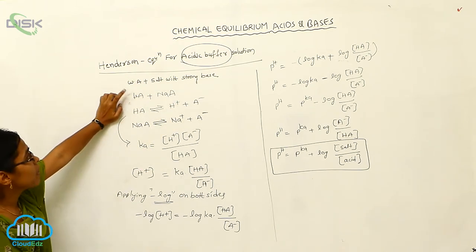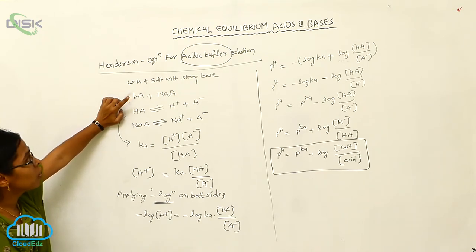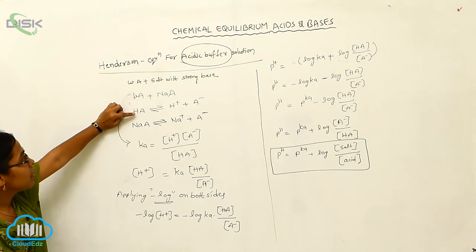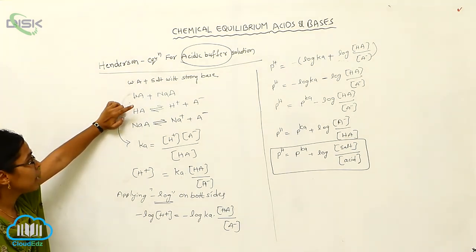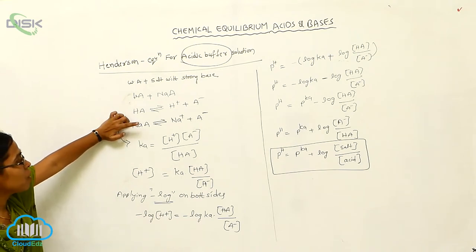In the place of weak acid, I am taking HA, and in the place of the salt formed with the strong base, I am taking NaA. Whenever HA involves in the reaction, it forms H⁺ and A⁻, and our salt also involves in the reaction, forming Na⁺ and A⁻.